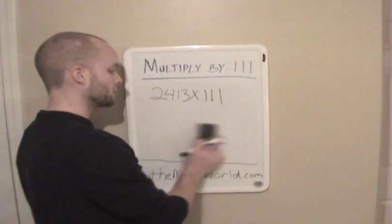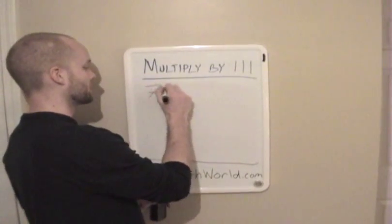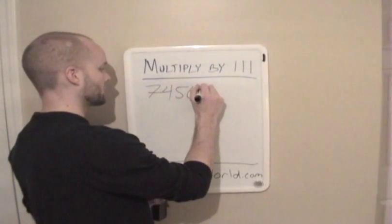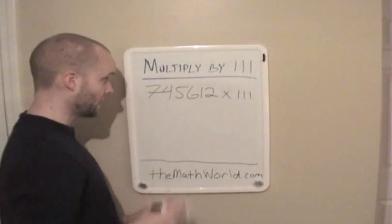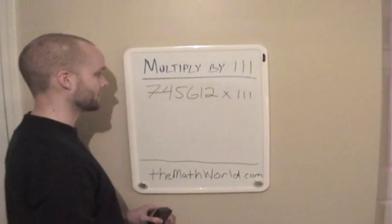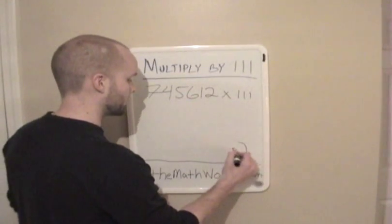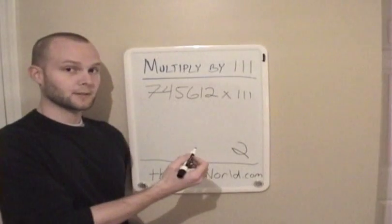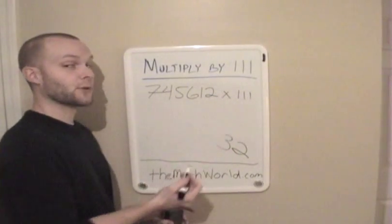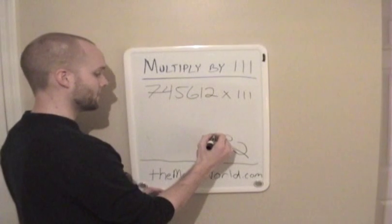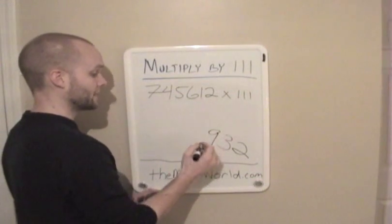We'll take a look at one more — a longer one so you can understand the process a little bit better. I'll just make up some numbers here: 5612 times 111. The number is going to be kind of big, so I'm actually going to write it at a diagonal. The first thing we're going to do is write the 2 down. Next we're going to add the last two digits: 1 plus 2 is 3. Then we add the last three digits: 6 plus 1 plus 2 is 9. Then we add the next three digits, which is 5 plus 6 plus 1, and that's 12.